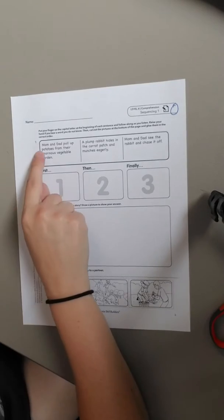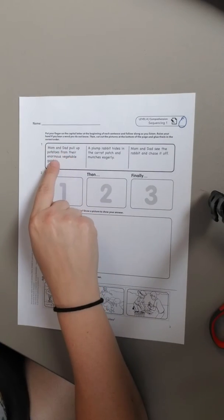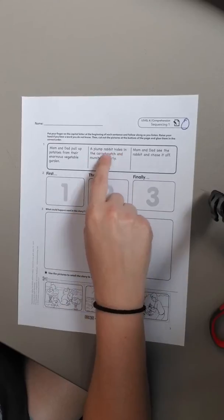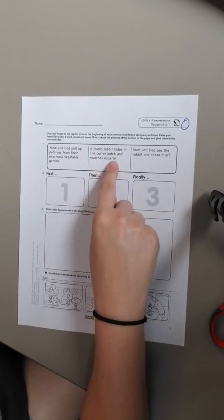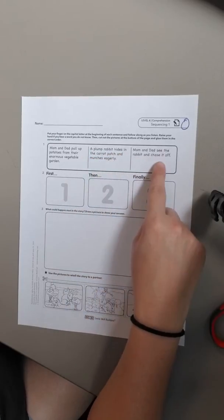So let's go ahead and get started. Mom and dad pull up potatoes from their enormous vegetable garden. A plump rabbit hides in the carrot patch and munches eagerly. Mom and dad see the rabbit and chase it off.